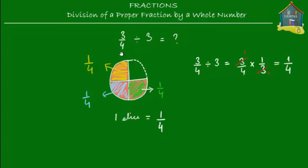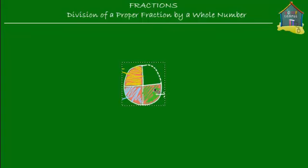So that's how you do three quarters divided by three — three fourths of a pizza divided among three friends gives one fourth each. Now instead of three, what if you have to divide it among six friends? Let's see what happens then. What is three quarters divided by six equal to?